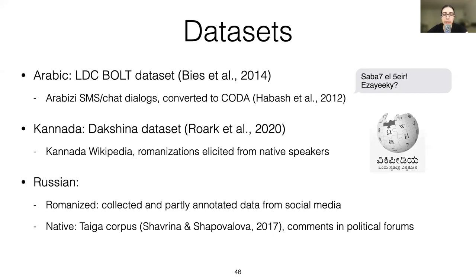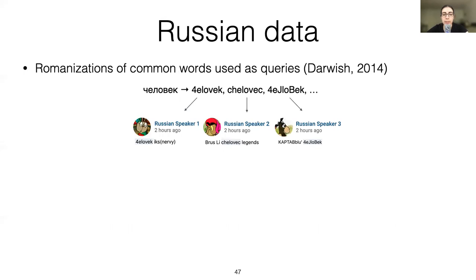For Russian, we collected and partially annotated our own dataset. We scraped romanized text from the social network vk.com, and for the native script side we used a portion of the Taiga corpus, also scraped from the same platform. Although both portions come from the same website, the Taiga data seems to be mostly from political discussion groups, so its vocabulary is very skewed. To collect the romanized data, we used romanizations of common words as queries, as Darvish 2014 did for ArabEasy — generating all romanizations we could think of for each common Russian word, then using them as search queries to get a diverse set of user preferences.